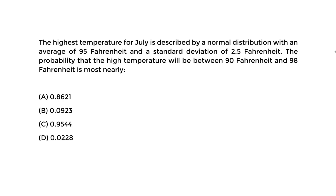This type of question is normal distribution, but the key word here is 'between.' We do not see greater than or less than — we see 'between.' So we have a region we're going to focus on between 90 Fahrenheit and 98 Fahrenheit. What is that probability of occurring using normal distribution?